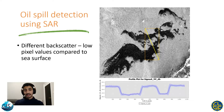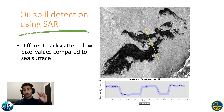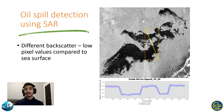One method that we can use to detect oil spills is by using synthetic aperture radar images. In SAR imagery, oil spills will have lower pixel values compared to the surrounding oil-free pixel values.